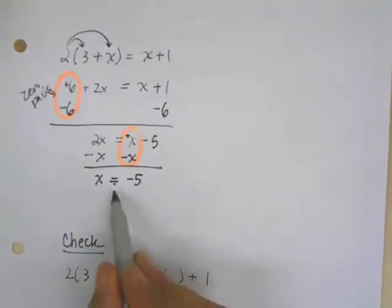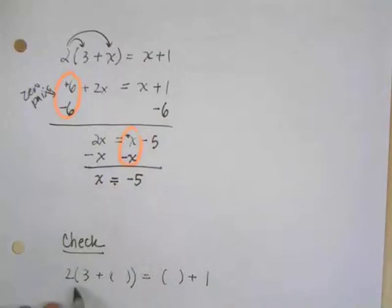Interesting. I got the same answer for both. They don't always give you the same answer, but that just happened to. Once again, the way to check, you write the problem again. So here's my original problem. 2 times 3 plus, and wherever there's an x, I'm going to put parentheses.